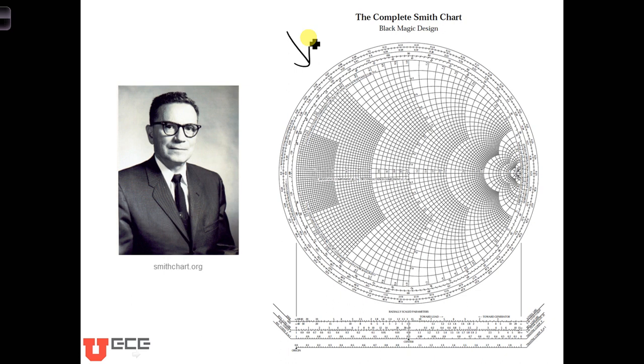We'll be using the Smith chart to obtain the input impedance more easily anywhere along the transmission line than using that analytical formula we had last time. And later, we'll see if we can use it to find a new way to match the antenna to the transmission line.